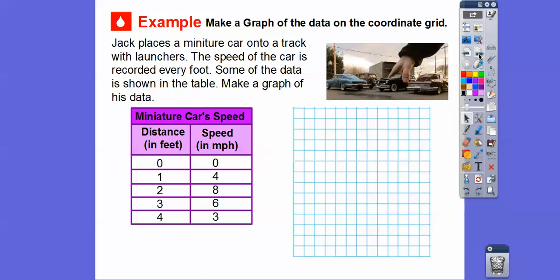Here's another one here. We're going to make a graph of this data on a coordinate grid. Now this is going vertical right here. Just like the last one, this is the first set of numbers. What do you think this is going to be, the x or the y's? x comes before y in the alphabet. So this is going to be our x values and this is going to be our y values right here. Jack places a miniature car onto a track with launchers. The speed of the car is then recorded every foot. Some of the data is shown in the table. Make the graph of his data.